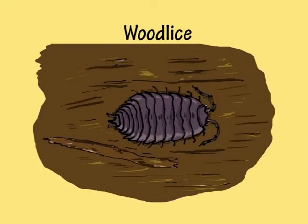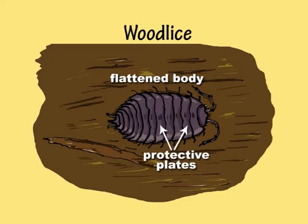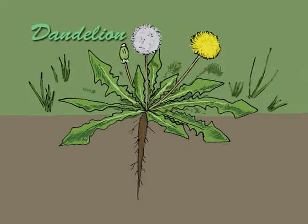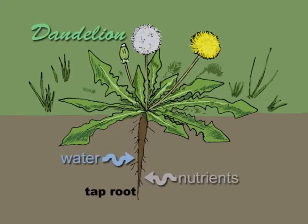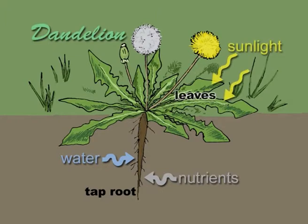Wood lice have flattened bodies so they can get under stones and wood, and protective plates covering their bodies to stop them drying out or being crushed. And dandelions have long tap roots to anchor them in the soil and absorb nutrients and water, and leaves that spread out to catch the sunlight.